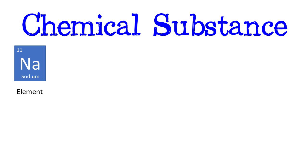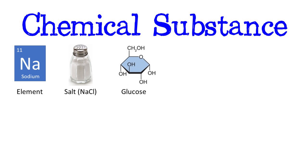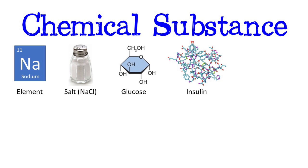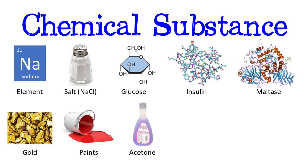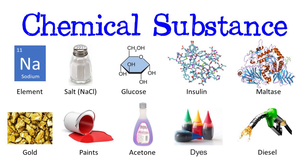A chemical substance can be anything, from an element, compound, carbohydrate, hormone, or enzyme to a metal, paints, solvents, dyes, diesel, and many more.